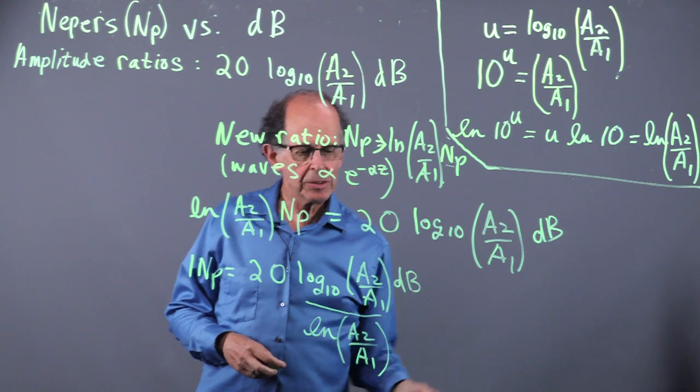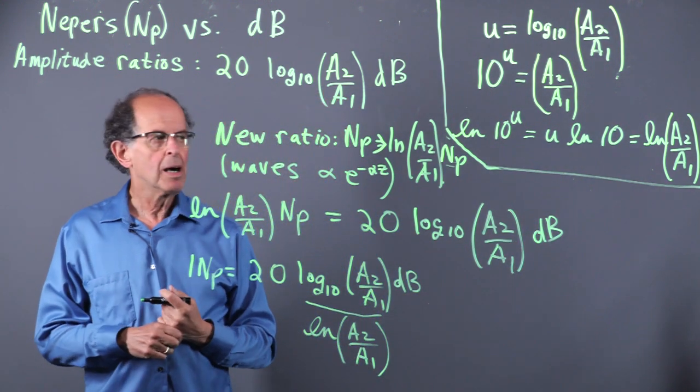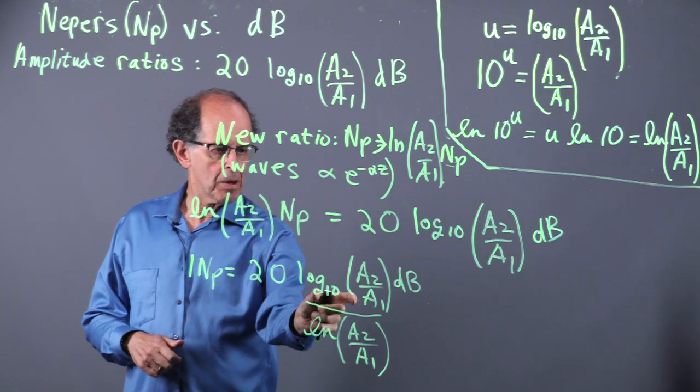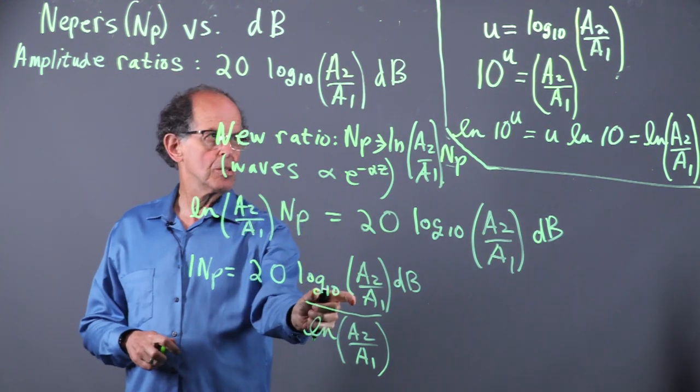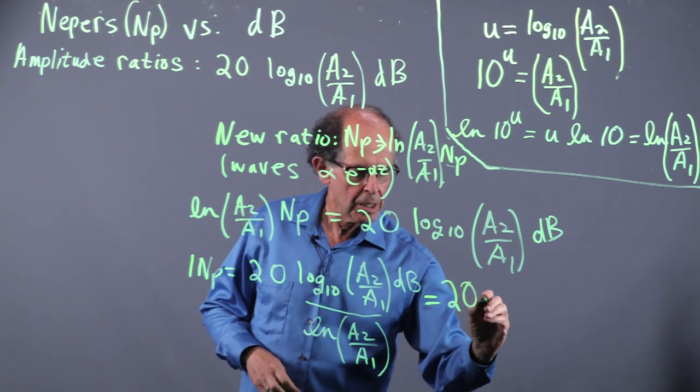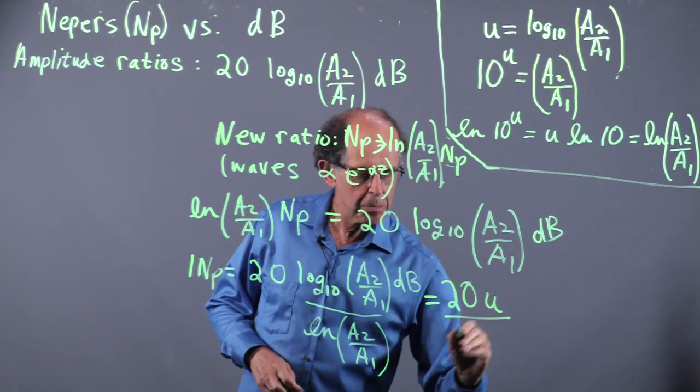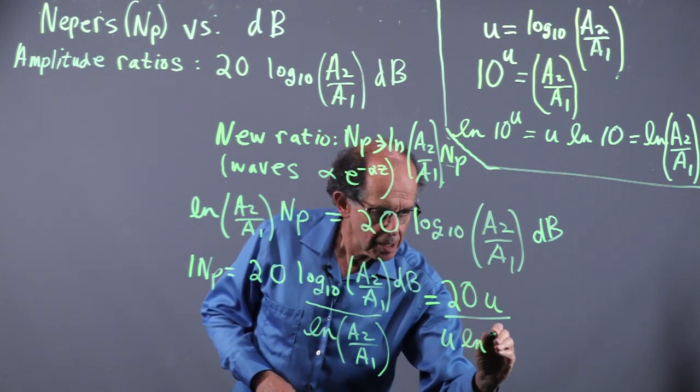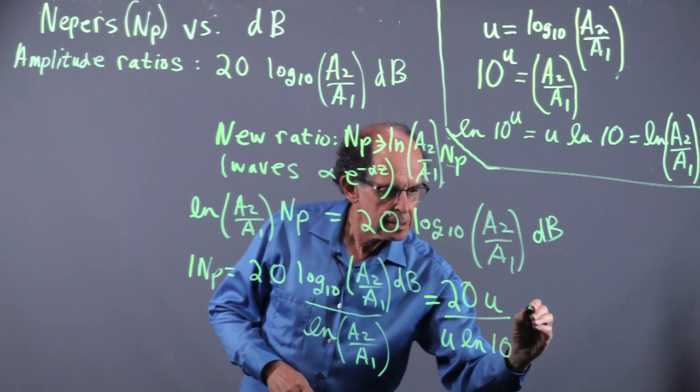So log of A2 over A1, that ratio is U log 10, and this quantity here is just U. So this is equal to 20 U divided by this, which is U natural log of 10, and dB.